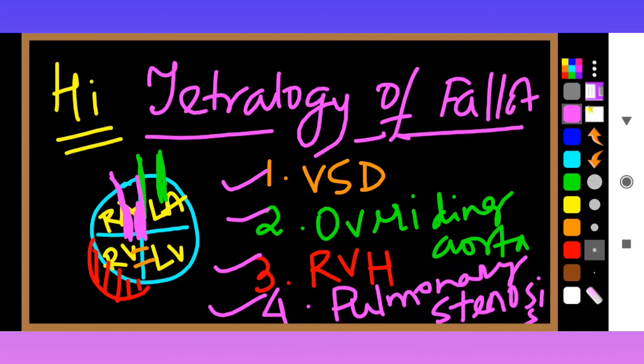Why is there right ventricular hypertrophy? The right ventricle has become hypertrophied because of pulmonary stenosis — the pulmonary artery has become narrowed, so the workload of the right ventricle has increased. It is working harder and has become more muscular, the same way when we go to the gym and work harder, our muscles get pumped.